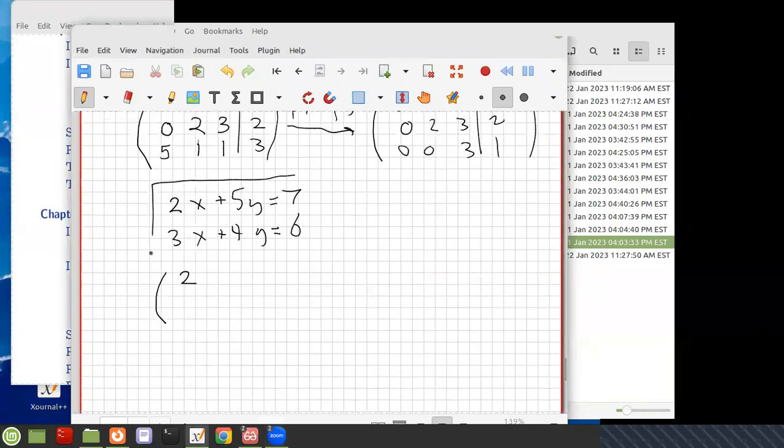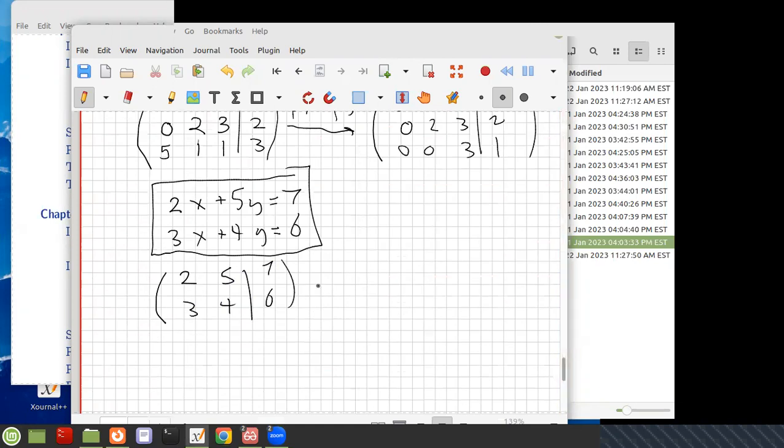Here's a linear system here. We have the augmented matrix will be 2, 3, 4, 7, 6. And one thing we could do is we could do 3 row 1, 2 row 2. To get, well, 3 row 1 would be 6, 15, 21. And the second one would be 6, 8, 12, right? I've multiplied the second one by 2,